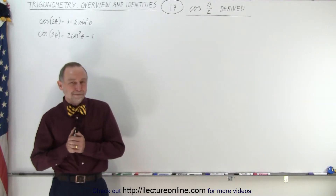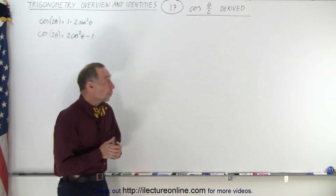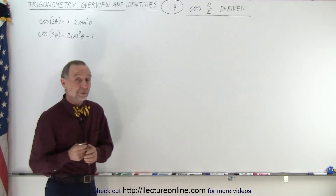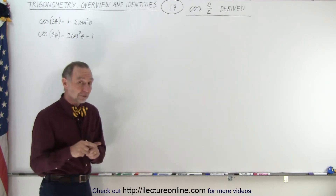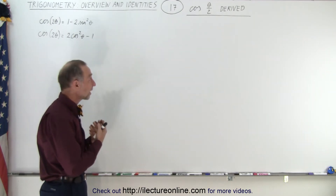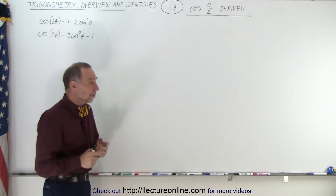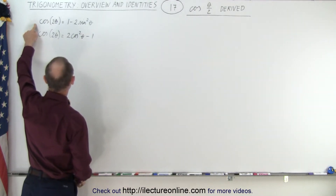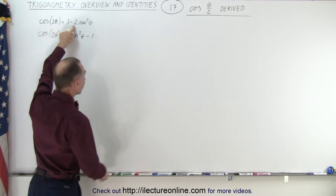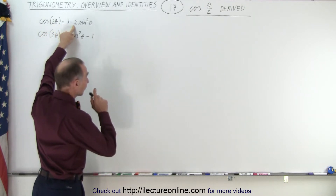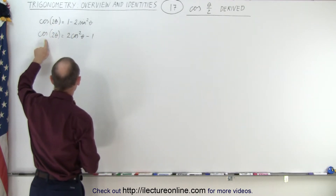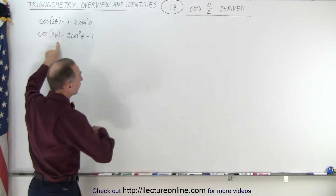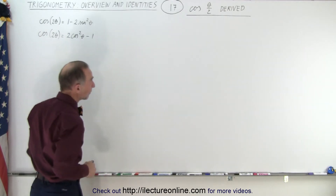Welcome to iLecter Online. In this video we're going to find the identity of the cosine of the half angle. Remember in the previous video we found the identity for the sine of the half angle, and we used one form of the cosine of twice the angle. We're going to use the other form of the cosine of twice the angle to find the identity for the cosine of the half angle.